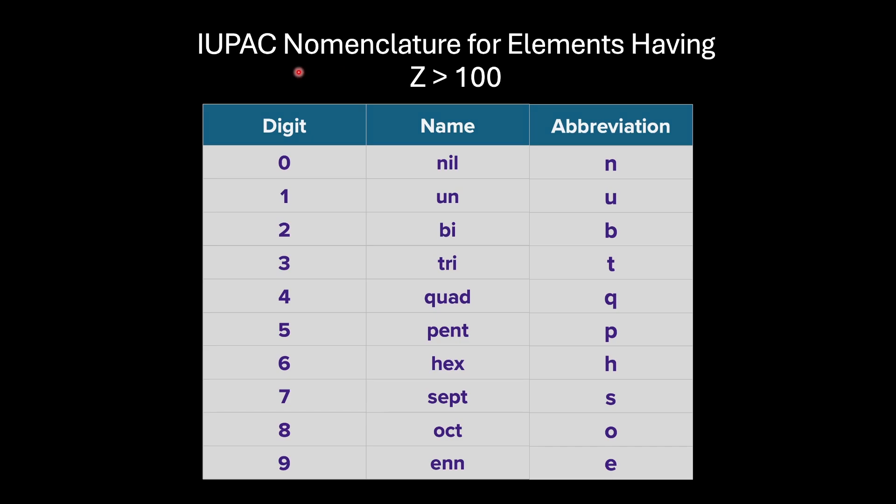This is the table that will make your life very simple in naming any element for atomic number greater than 100. You can see that we have digits from 0 to 9. Every digit corresponds to a root name. For example, for 0 we have nil, for 1 we have un, for 2 we have bi, for 3 we have tri, for 4 we have quad, for 5 we have pent, 6 hex, 7 sept, 8 oct, 9 enn. And every root name has the starting alphabet which we are making use of as abbreviation. These abbreviations will be unique for every atomic number for Z greater than 100.